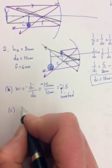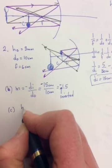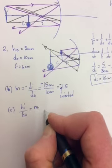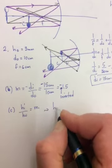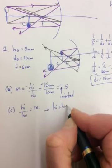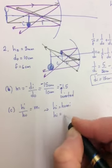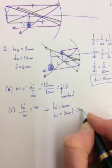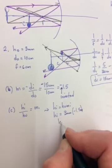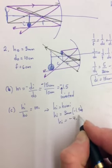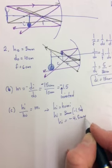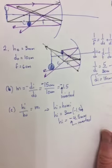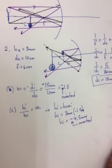Part c wants to know what is the height of the image. So the height of the image, hi over ho, is equal to, well you could use that magnification you just found, or you could do di over do. So hi would be equal to ho times mi. So hi would be equal to 3 millimeters times the negative 1.5, and so you get an hi of negative 4.5 millimeters. And again, the negative means inverted, but inverted means real, and I don't like the negative because of that.